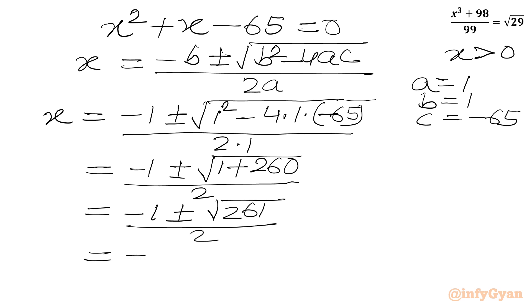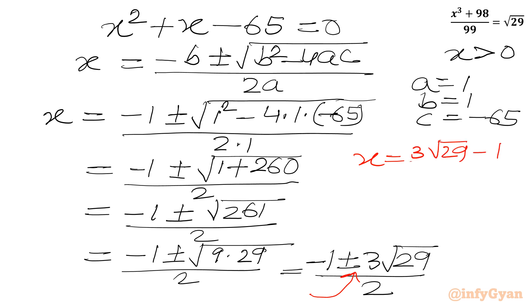So we can write minus 1 plus minus square root 261 over 2. Or we can write minus 1 plus minus square root 261, we can factor 9 times 29 as 261, over 2. So this will become minus 1 plus minus 3 times root 29 over 2.